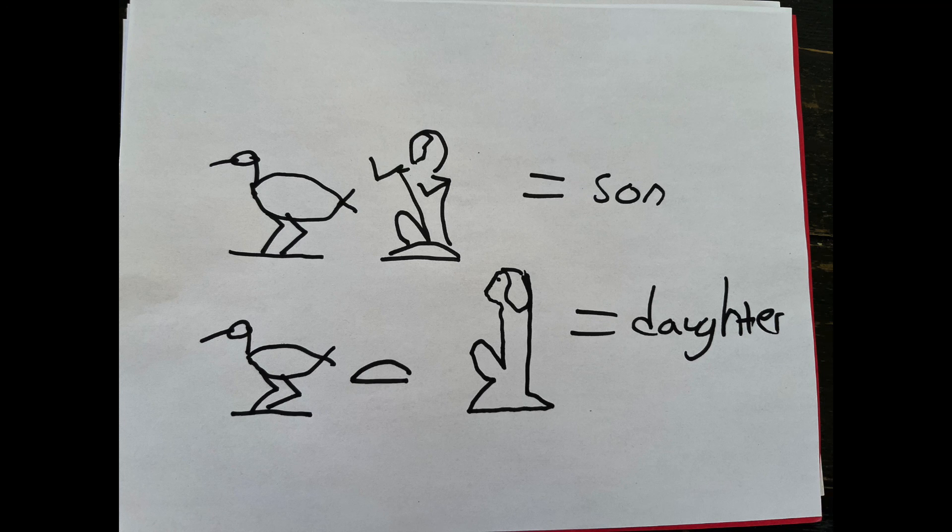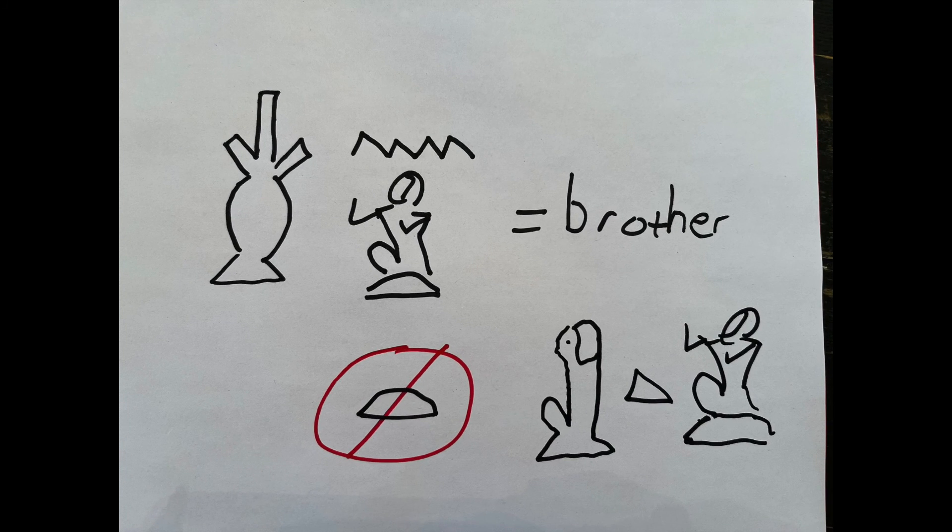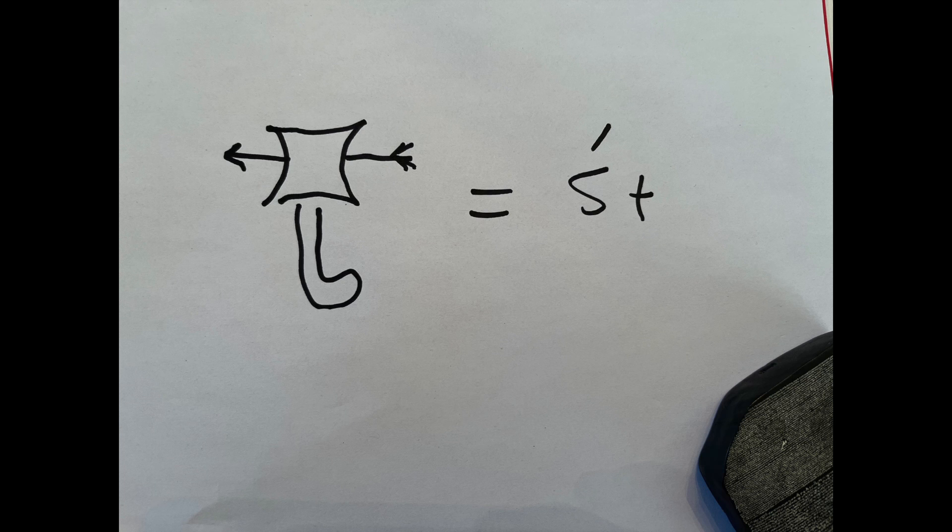Now, much as we talked about how son and daughter are very similar words, it's the pintail duck followed by a determinative of a man or a woman, and if it's a woman, it gets the extra T. Similarly, if we remove the T and change the glyph of the woman determinative to a man, suddenly the word sister now becomes brother. This one does not also mean husband, by the way. Husband has a proper word, which is a it, a T.